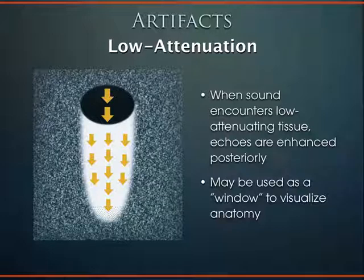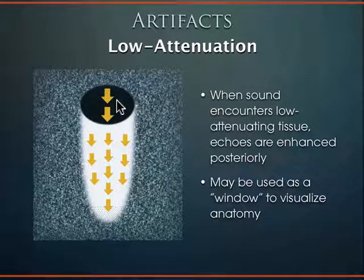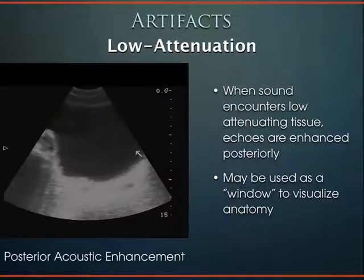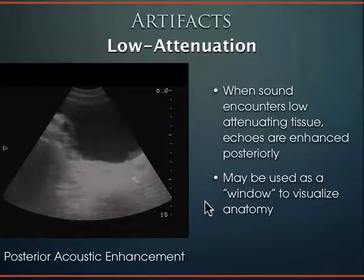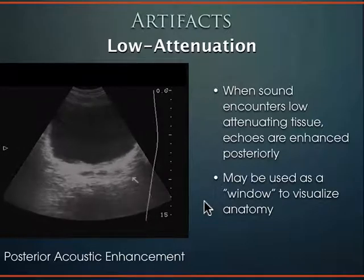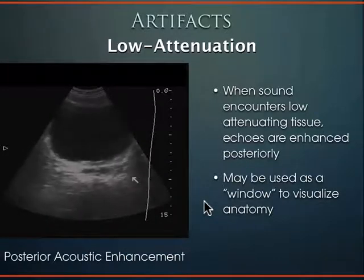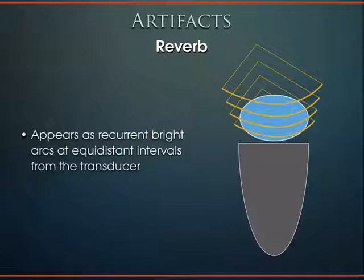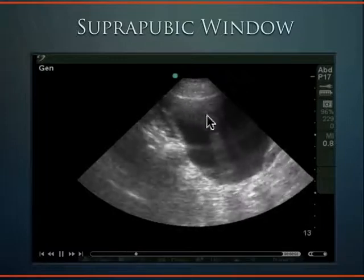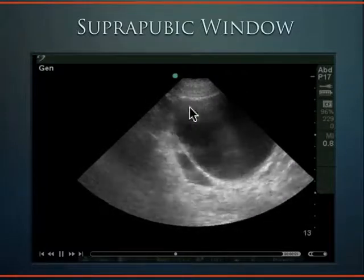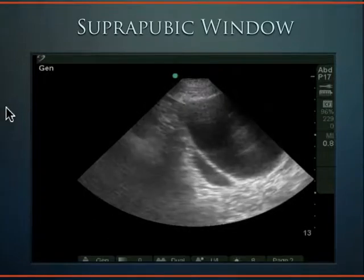Regarding artifacts with the bladder: it's a low-attenuating structure, so sound travels through easily and everything behind it becomes hyperechoic. That's useful, but sometimes you need to turn down the far-field gain because things are too over-gained posteriorly. Another common artifact is reverberation artifact — equidistant bright arcs coming down from the transducer — which we see frequently when looking at the bladder.